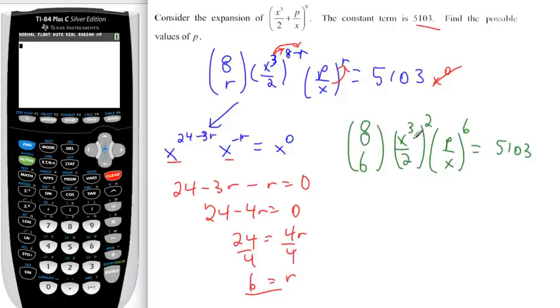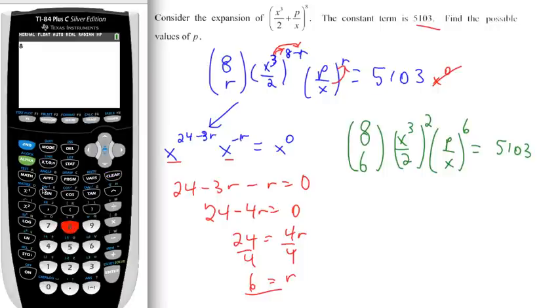Okay, so what you see here is you get x to the 6 over x to the 6 cancelling. We need to know what 8 choose 6 is, so we go to math, and then probability. Number 3, we're 8 choose 6, so we end up with 28.